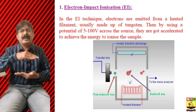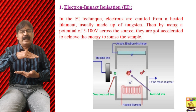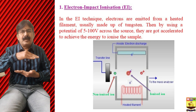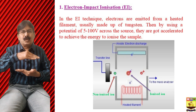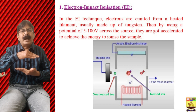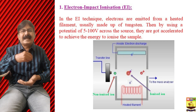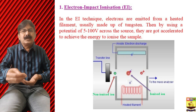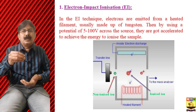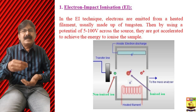The electrodes give a potential across the source in the range of 500 to 100 volts, and this accelerates the electrons to ionize the sample.